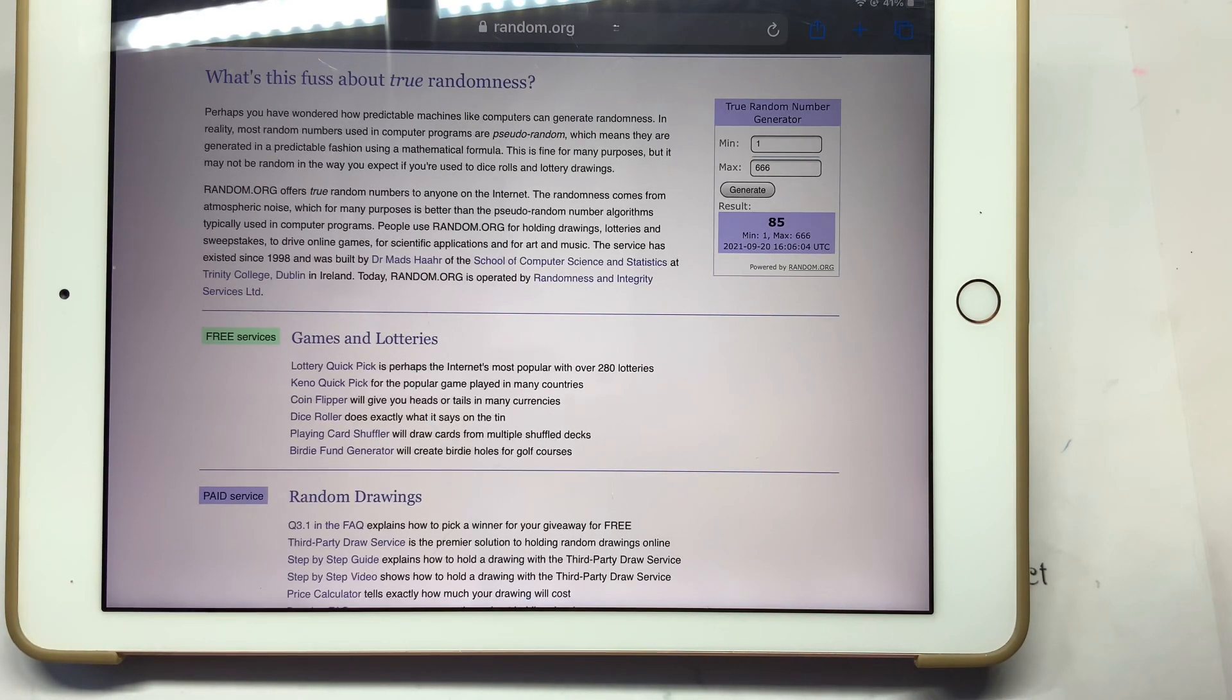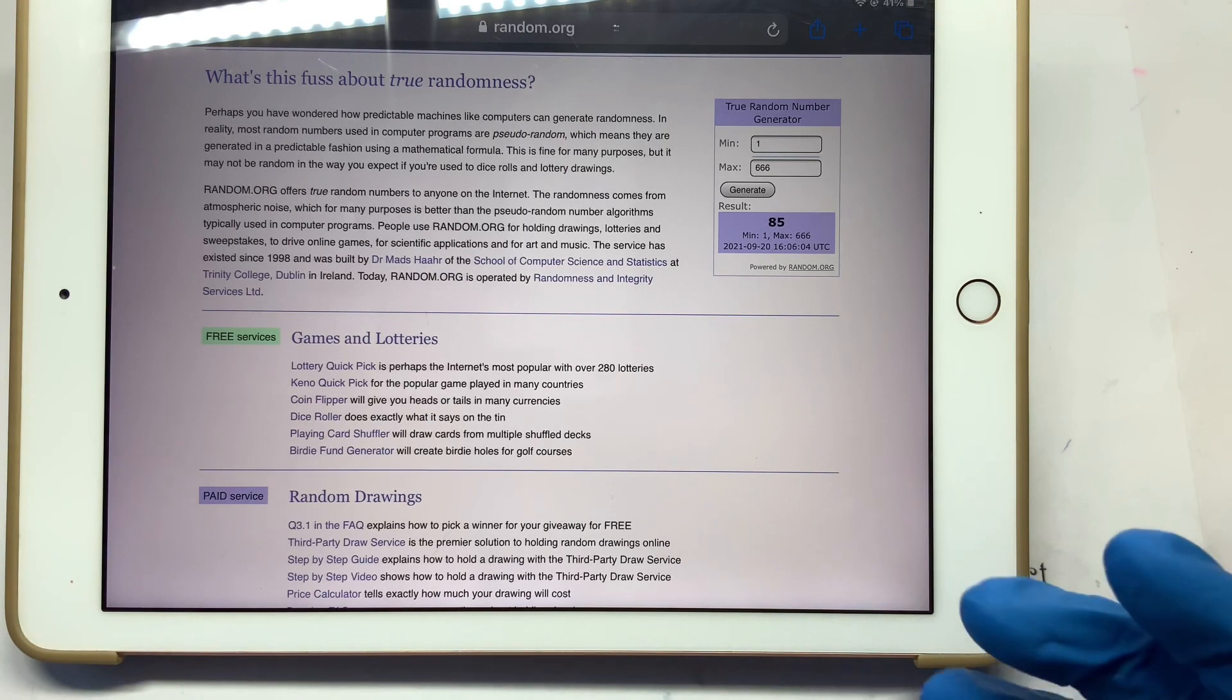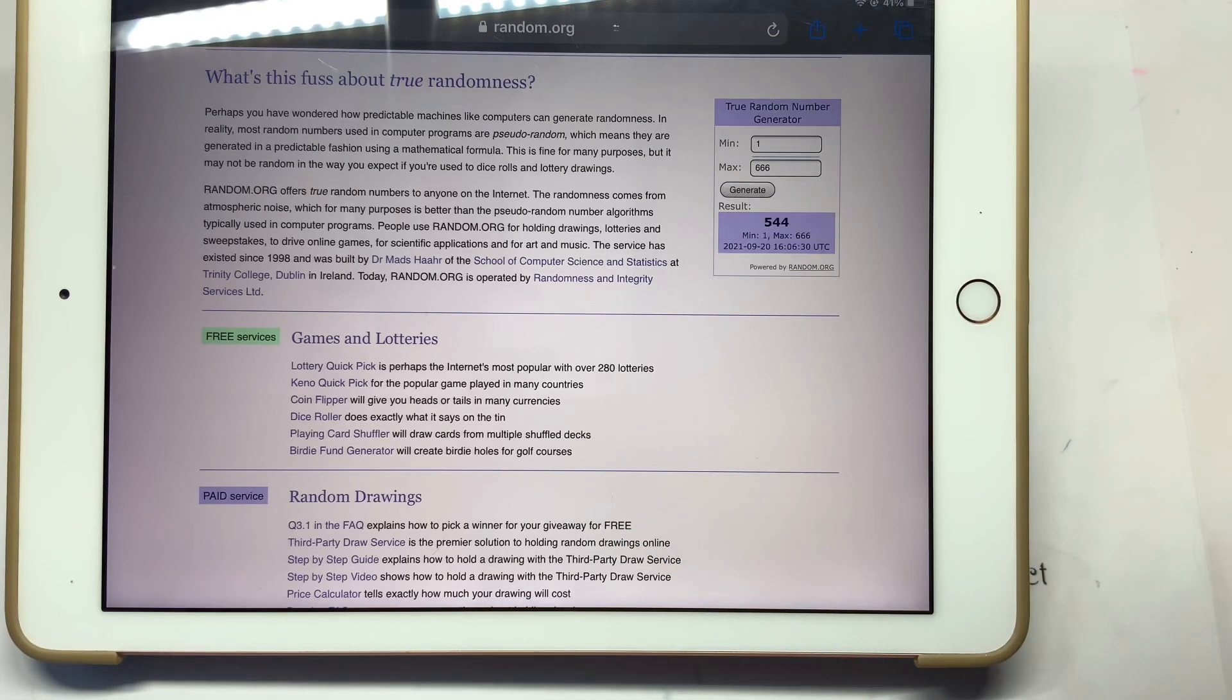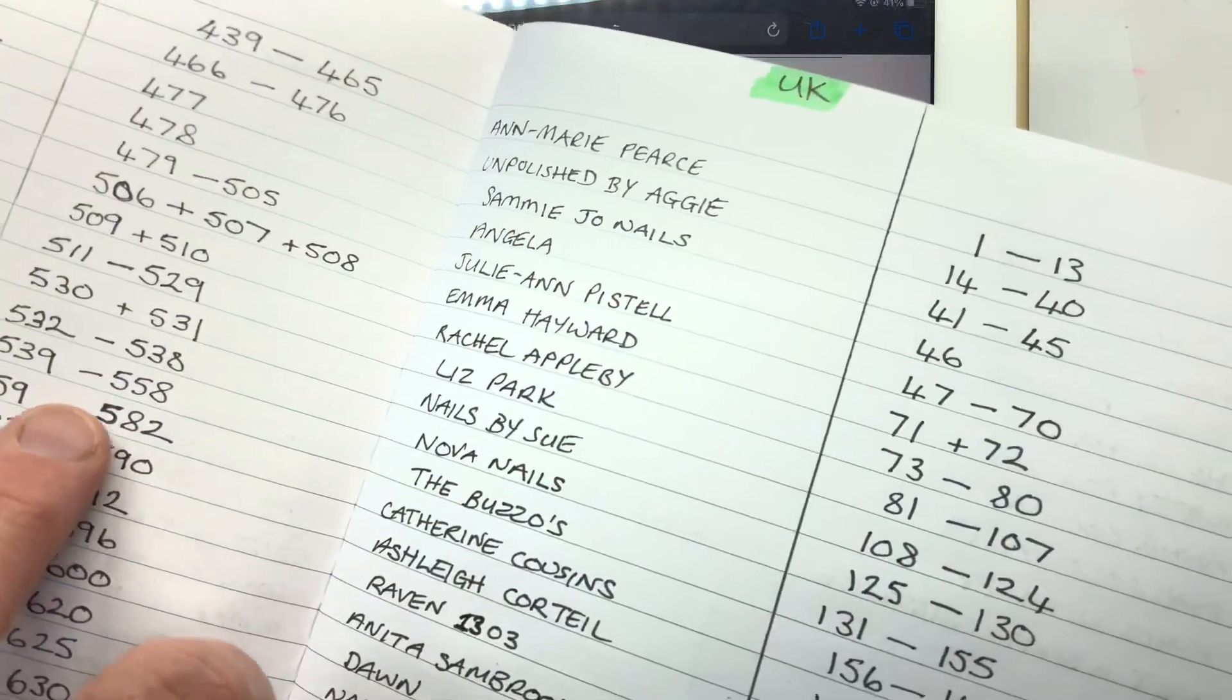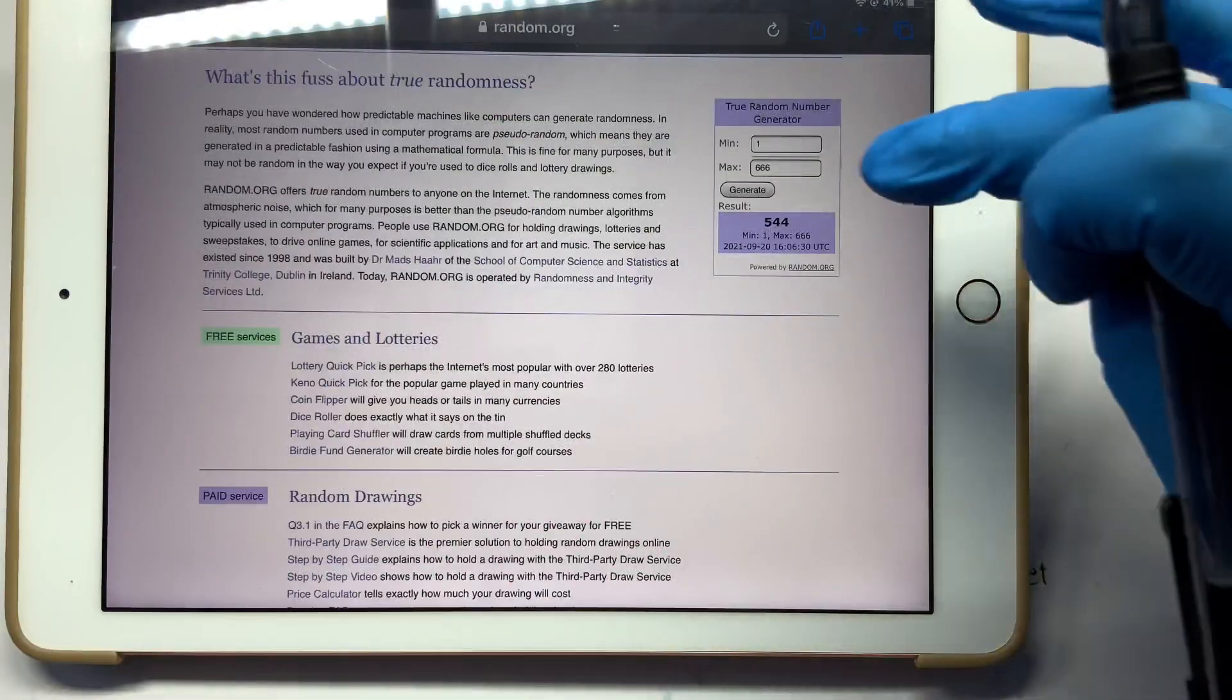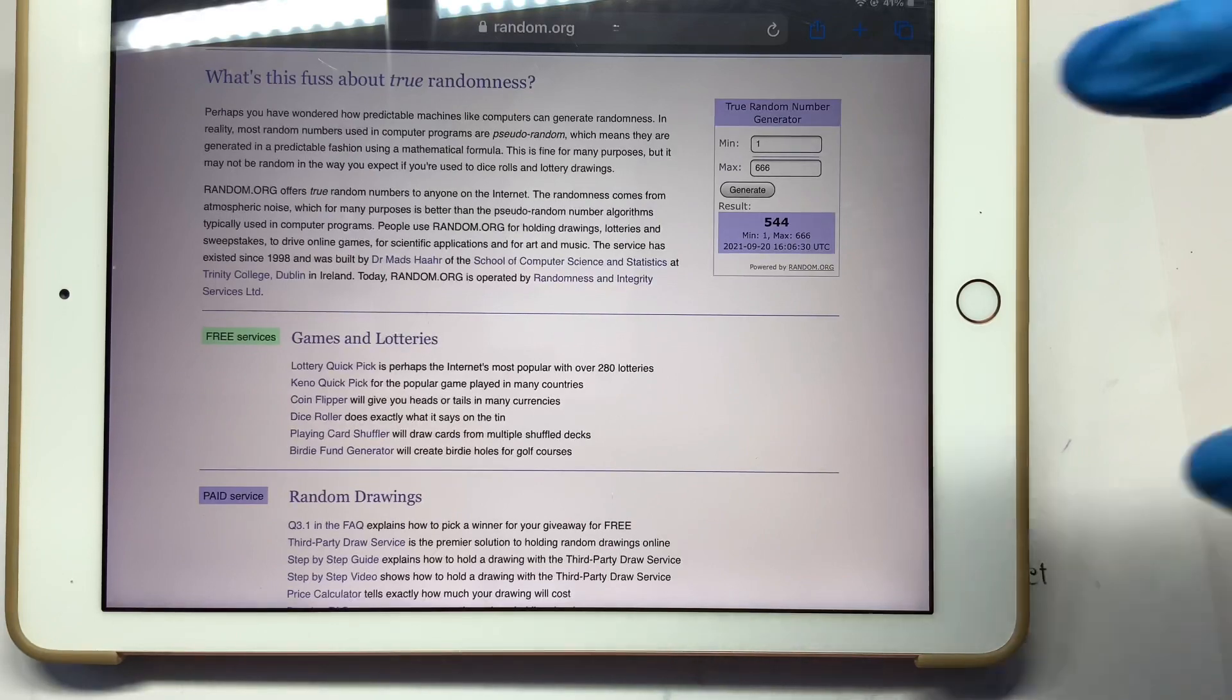Next we have got ten pounds either via PayPal or bank transfer. 544. That's Anaria again, so we'll draw that one again. Sorry, I'm in the way of the camera.